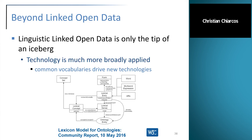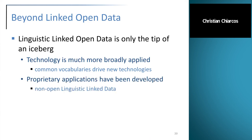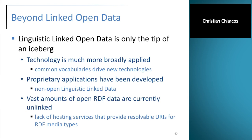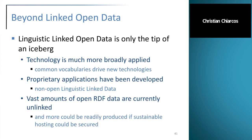Taking a quick look at the OntoLex model, proprietary applications have been developed on this basis — so there is non-open linguistic linked data. This is actually why this event today is not called 'linguistic linked open data' but 'linguistic linked data.' In addition, there are vast amounts of open RDF data available that are still unlinked. One reason is that it can be hard to find hosting services that provide resolvable URIs for RDF media types. However, if this issue could be addressed, great amounts of data could be readily produced as RDF if a sustainable hosting solution could be secured.